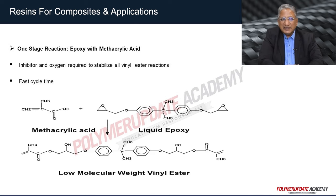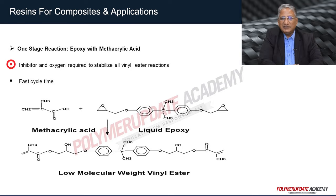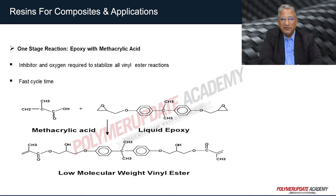The one-stage reaction for manufacturing vinyl ester resin uses epoxy with methacrylic acid. The reaction requires an inhibitor and oxygen to stabilize all vinyl ester reactions, and it also has a fast cycle time. Basically, methacrylic acid reacts with liquid epoxy resin to form a low molecular weight vinyl ester.